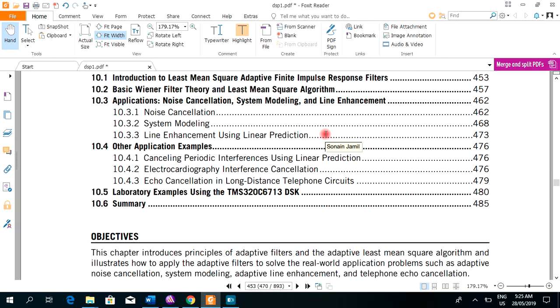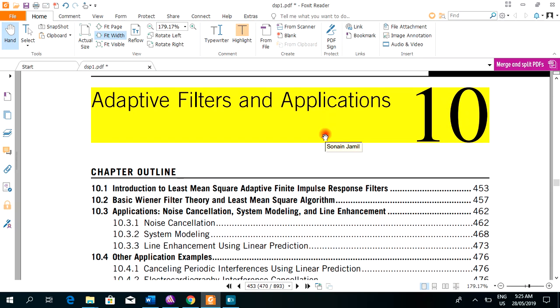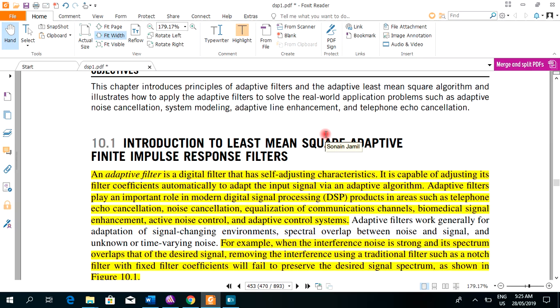According to this book which is written by Lytton, it says that an adaptive filter is a digital filter that has self-adjusting characteristics. It means that it adjusts by itself. It adjusts its coefficients automatically.